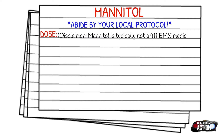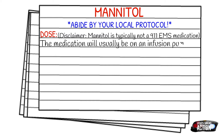Your adult and pediatric dose is 0.5 to 1 gram per kilogram. The main difference between the adult and pediatric dose is really just the rate at which it goes into the patient.